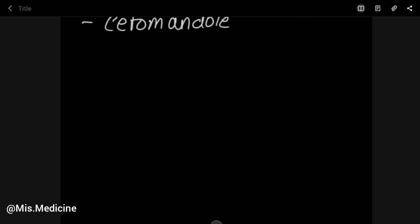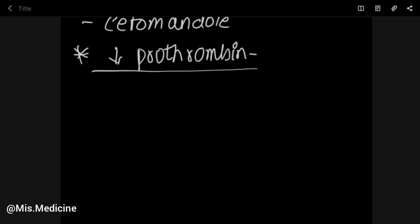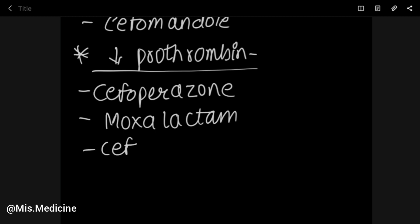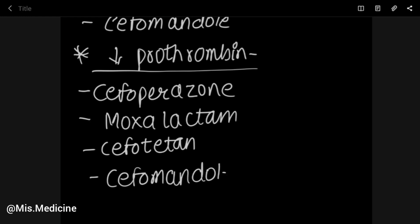Some Cephalosporins also help in decreasing Prothrombin levels. The Cephalosporins that decrease Prothrombin include Cefotetan, among others. These are important clinical properties to note for this drug class.